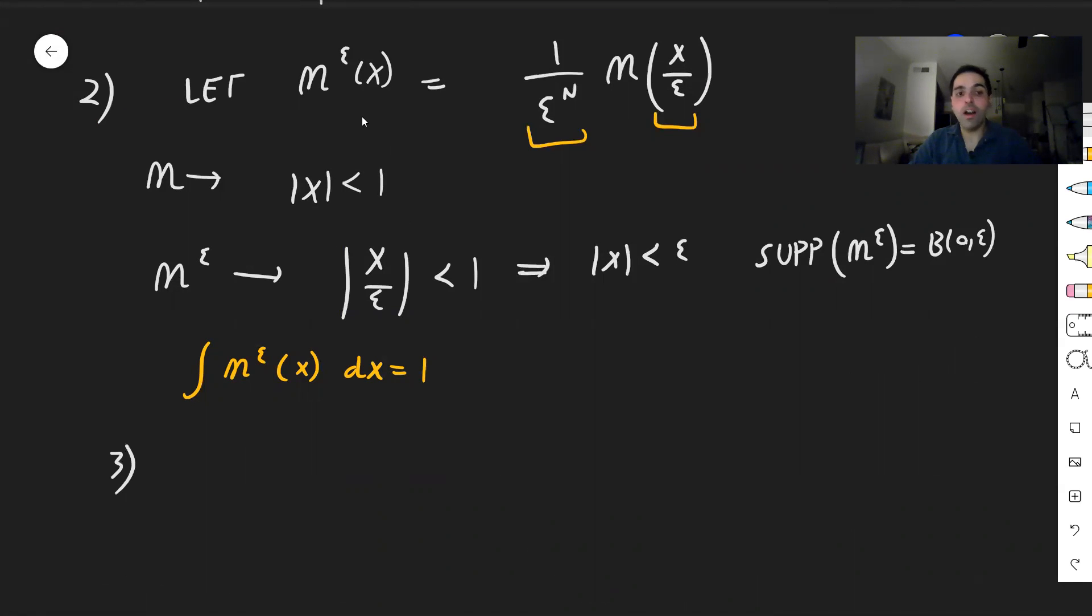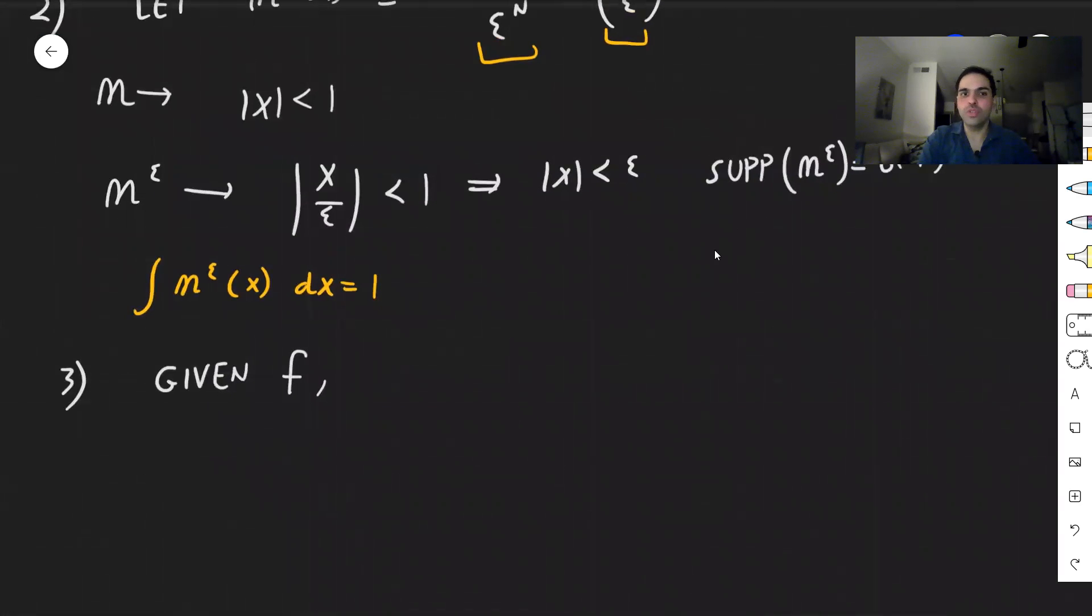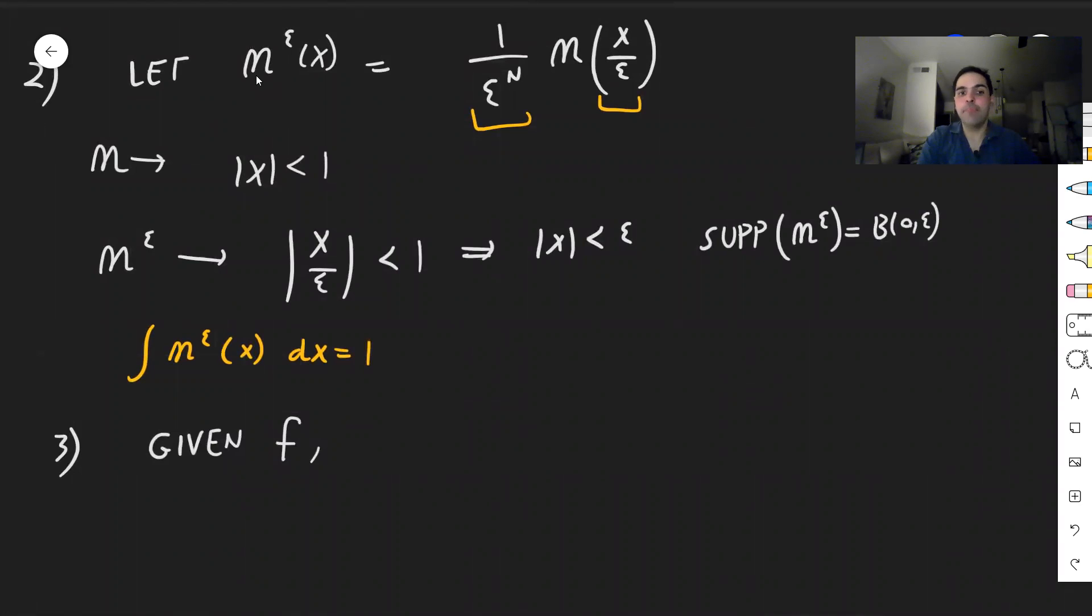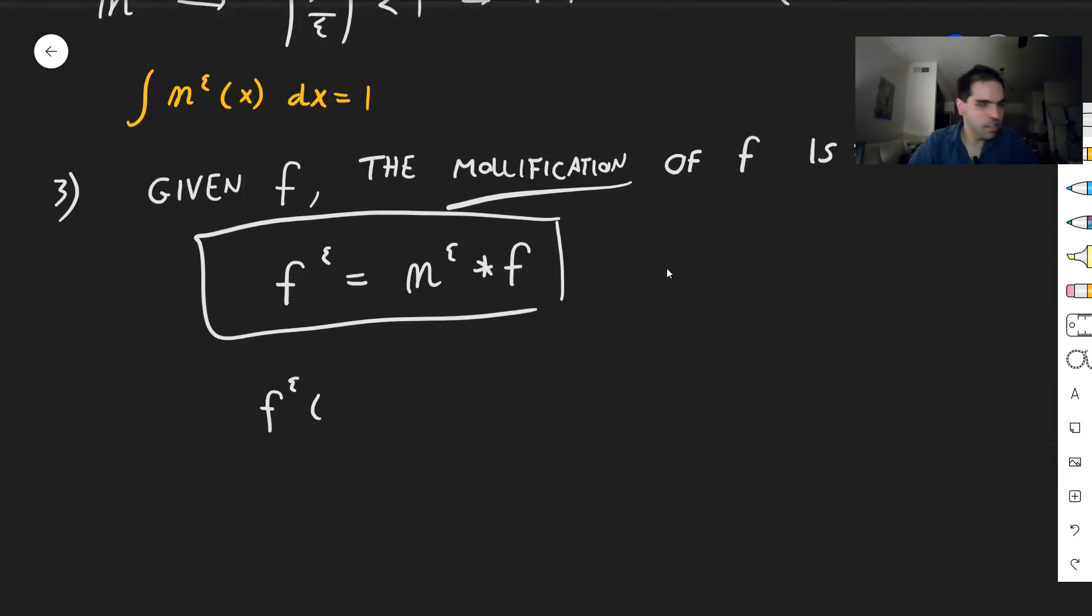And so what is the mollification? So given f, how do we transform it into a super smooth function, f epsilon as above? Very easy. All you do, you multiply f with your eta epsilon, except here multiplication means the analysis multiplication, which is convolution. So given f, the mollification of f is simply f epsilon, which is eta epsilon convolved with f. So in terms of analysis definition, f epsilon of x, it's the integral over R^n, if you wish, of eta epsilon of y times f of x minus y dy.